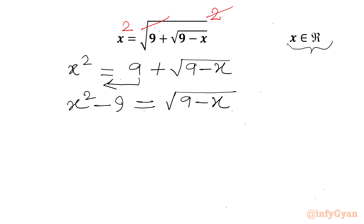We still have a square root on the RHS, so we will square both sides once again. Let's put power 2 on both sides and cancel the square root and square once again. Our equation will become x squared minus 9, whole squared, equals 9 minus x.